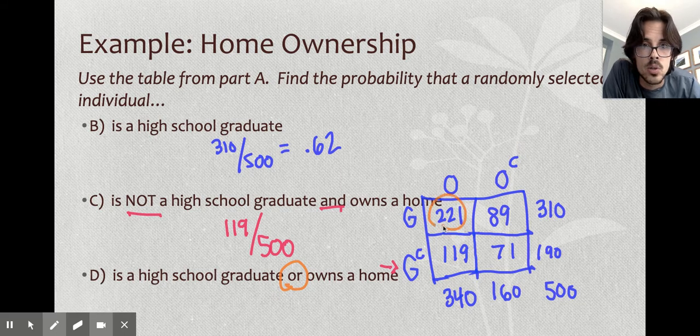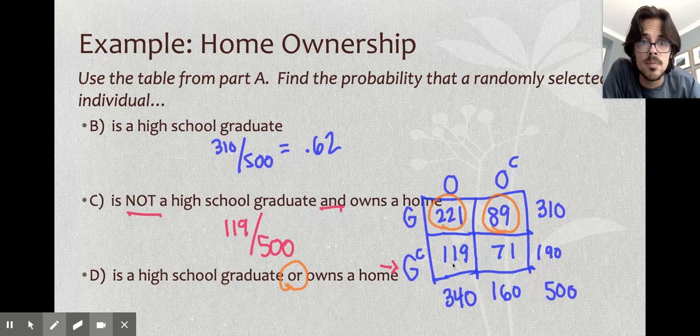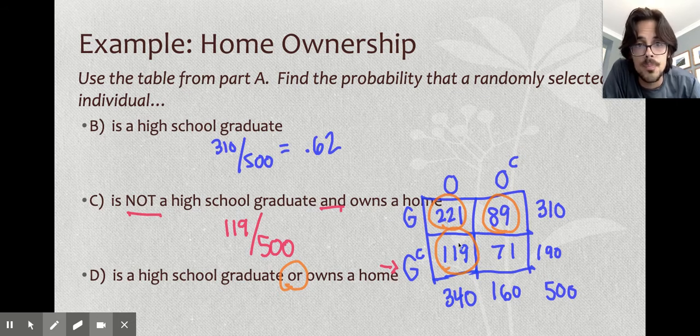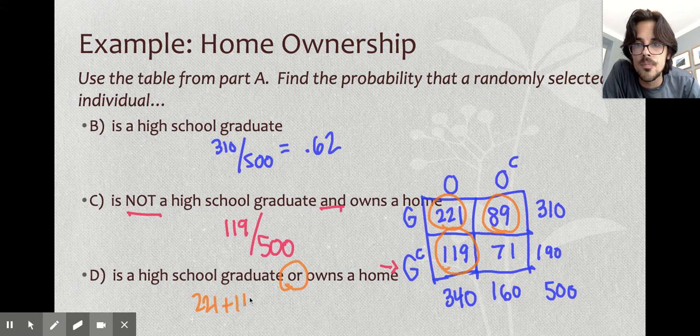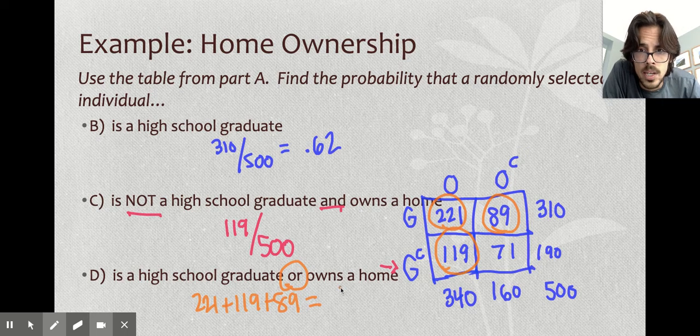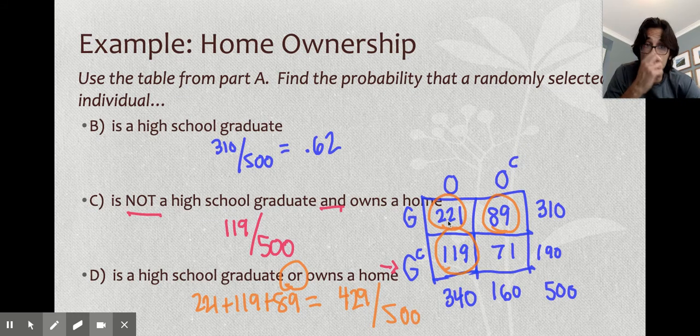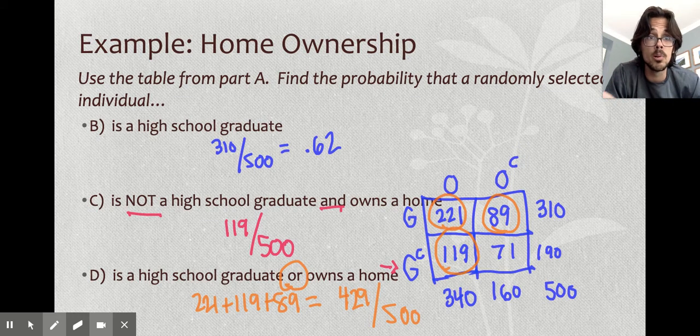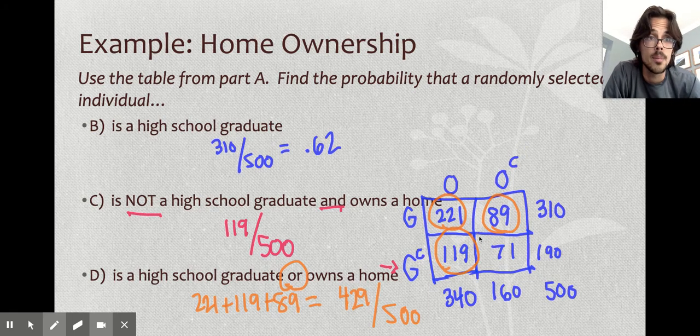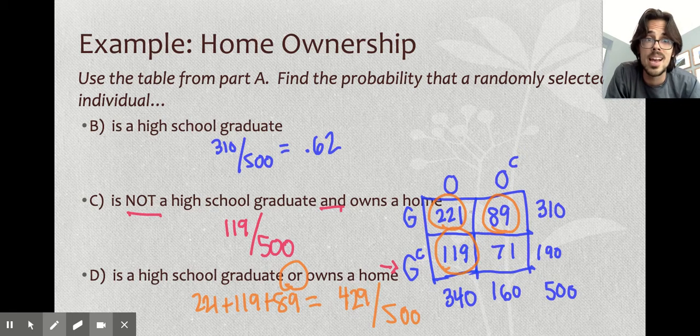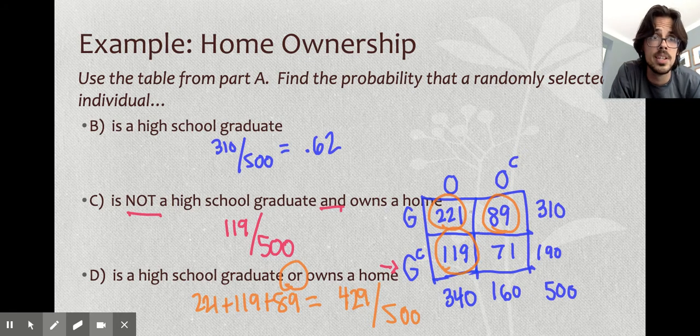But if you have a table, the tables are already separated. So each box on the inside is mutually exclusive. If you're a grad and a homeowner, you're not a grad and a not homeowner. You can only fit into one of these boxes right here. So if you take the time to make the two-way table, all you need to do is just circle up all the stuff you care about. High school grad. Okay. That's you. That's you or homeowner. Well, I already circled that one, so I'm not going to do that again, but this is also a homeowner right here. And if you add these guys straight up, you will get your answer for the problem.